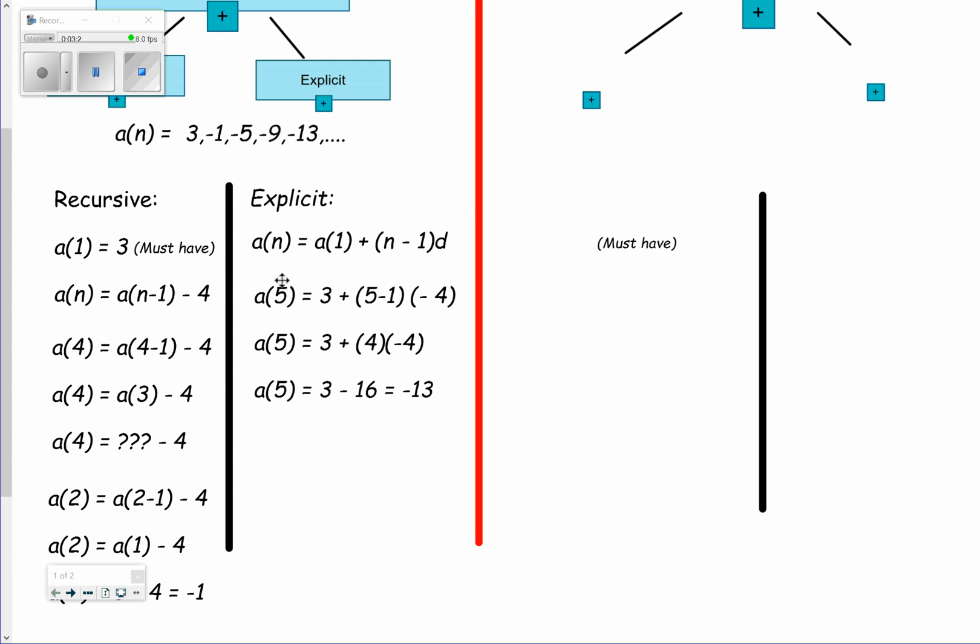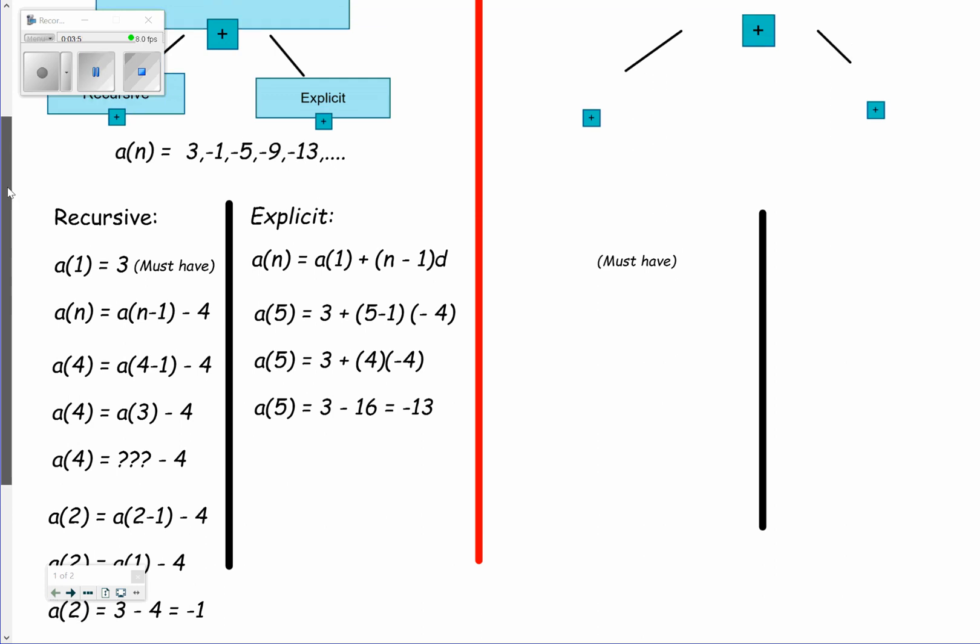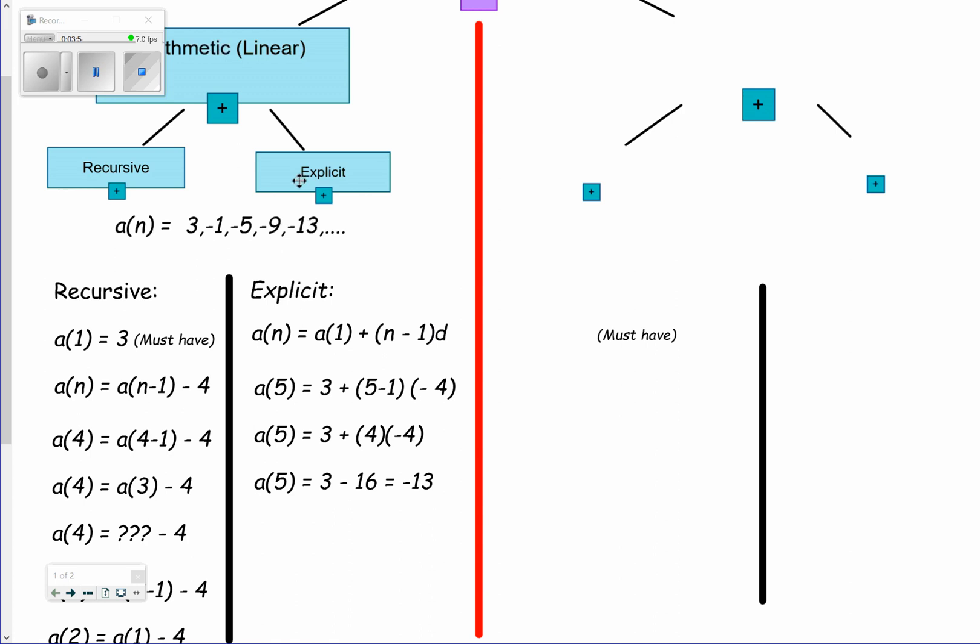In this case, suppose I wanted the fifth term. I'd plug a 5 in for n, and I would plug a 5 in for n right here. The first term is 3. Now just evaluate it: a of 5 equals 3 plus 4 times negative 4, because this is 5 minus 1 times negative 4. 4 times negative 4 is negative 16. 3 subtract negative 16 is 13. And it's the fifth term, negative 13, and it is. So there's a brief run-through on arithmetic sequences, both recursive and explicit.